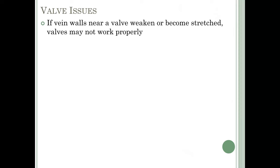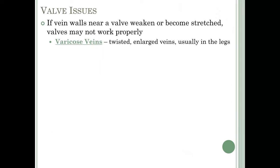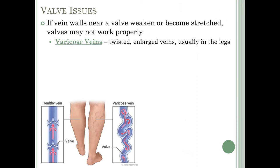If the vein walls near a valve weaken or become stretched, the valves may not work properly, leading to varicose veins — twisted, enlarged veins usually occurring in the legs. In the healthy vein, blood flows upward and the valve prevents backflow. With a varicose vein, the vein gets stretched and twisted, the valves no longer work properly, blood pools back in the veins, and that stretches them out and enlarges them.